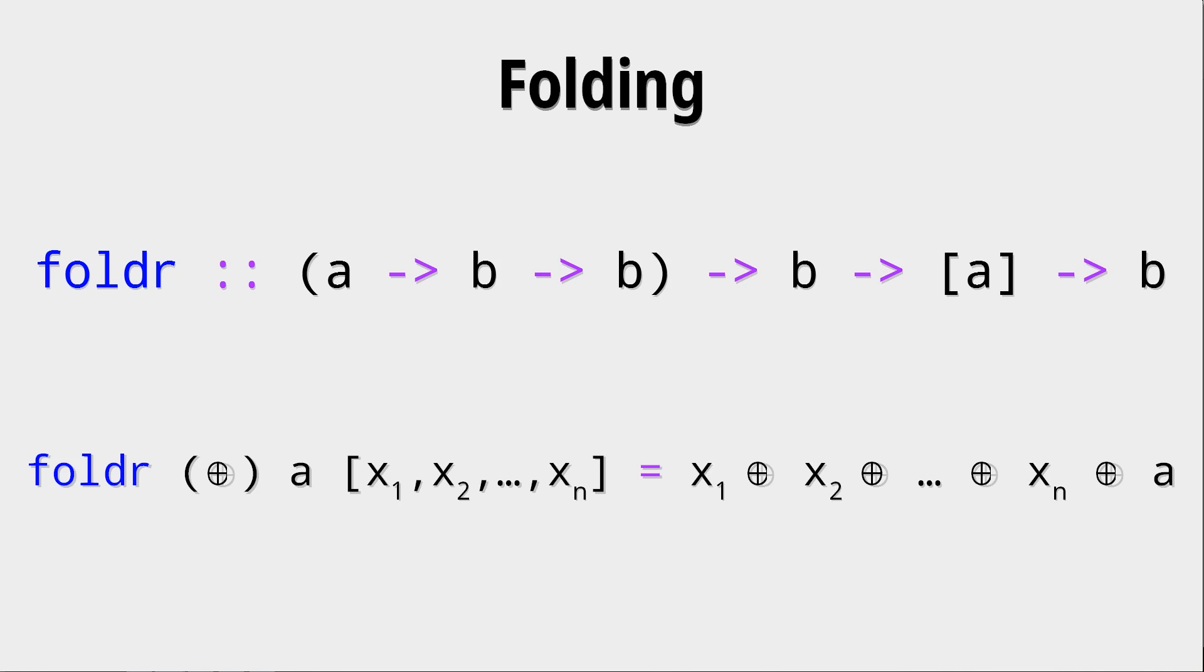because otherwise you couldn't do the last function call since you need two arguments for this binary function. And for example, if we only had a list containing one element, we couldn't do this function call.